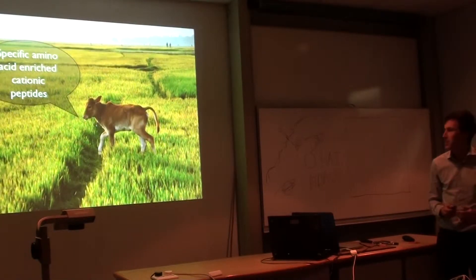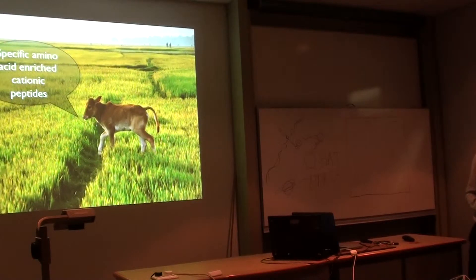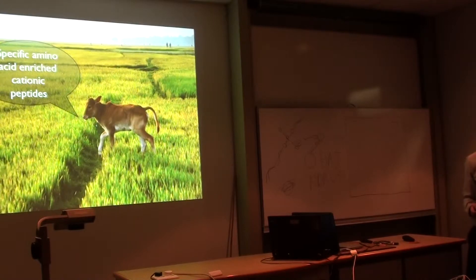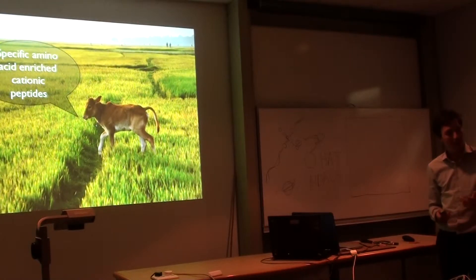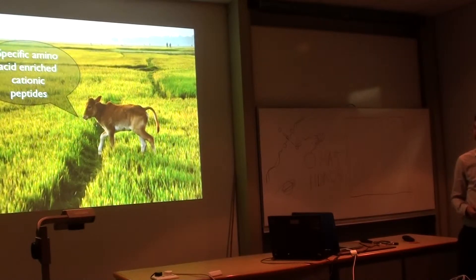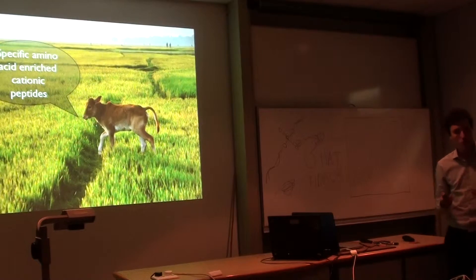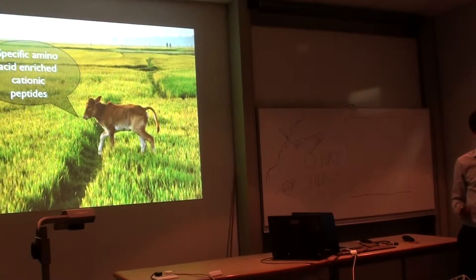Number three, we have specific amino acid-enriched cationic peptides. As the name suggests, they are enriched with certain amino acids like proline, arginine, glycine, tryptophan, and phenylalanine. An example is indolicidin, which is currently used in conjunction with antibiotics to treat persistent staphylococcus infections.